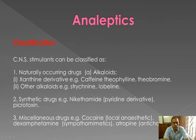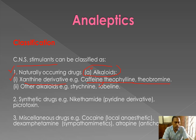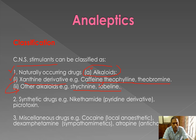Now let's go to the classification of analeptics, which are CNS stimulants. The first classification is naturally occurring drugs — alkaloids. In that, the subcategory is xanthine derivatives: caffeine, theobromine, and theophylline. Other alkaloids include strychnine and lobeline. These are all natural products that are analeptics.